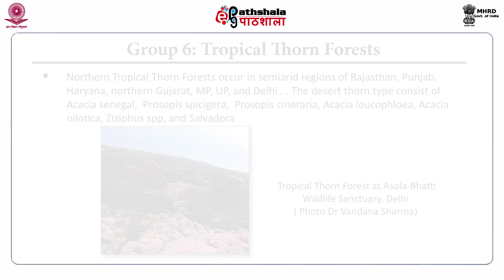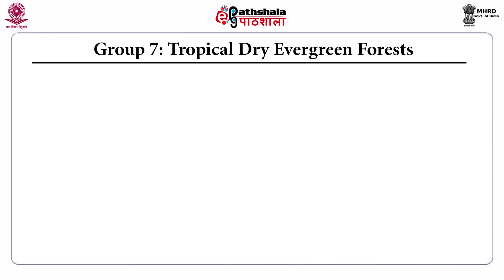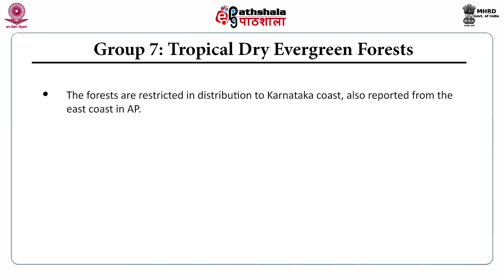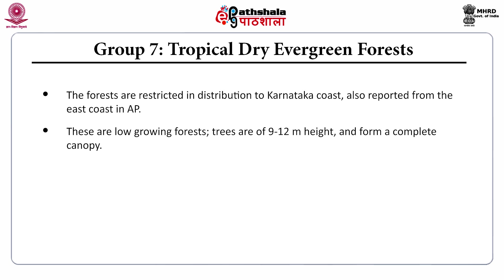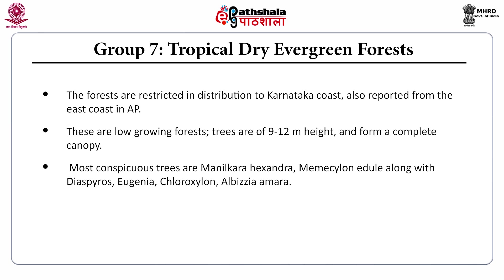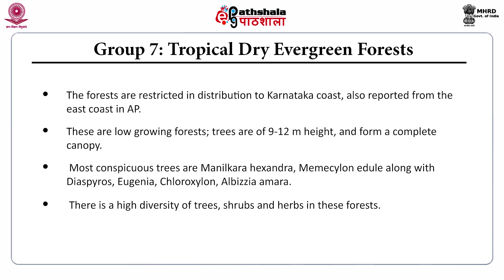Group 7, the tropical dry evergreen forests, are restricted in distribution to the Karnataka coast and also reported from the east coast in Andhra Pradesh. These are low-growing forests; trees are 9 to 12 meters in height forming a complete canopy. Most conspicuous trees include Manilkara hexandra, Memecylon edule, Diospyros, Eugenia, Chloroxylon, and Albizia amara. There is a high diversity of trees, shrubs, and herbs in this forest.